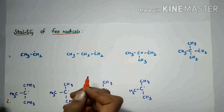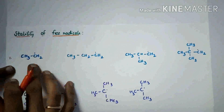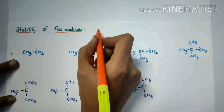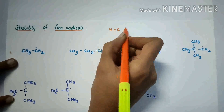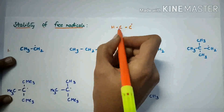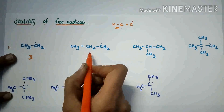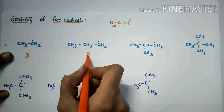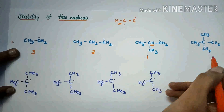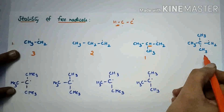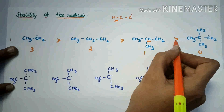Stability of free radicals is the same as that of stability of carbocations. The alpha hydrogens in free radicals are counted the same as for carbocations. Here, three alpha hydrogens. Here, two alpha hydrogens. Here, one alpha hydrogen. And in this compound, there are no alpha hydrogens. So the stability is in this order.